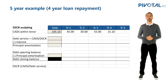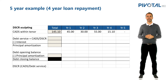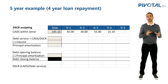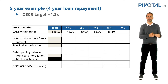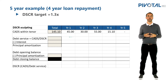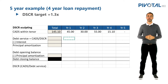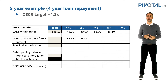We have here a five-year example with four years of cash flows, and you can see our CADs totaling 145 million. Our debt service is simply a rearrangement of our DSCR formula — debt service equals CADs divided by DSCR. In this case, our DSCR is set as 1.3. So in year one, we divide our 45 million to get 34.62 million, and repeat the same for the remaining periods. All we've done is taken CADs divided by DSCR to get our total debt service.